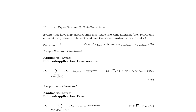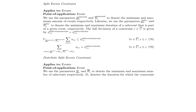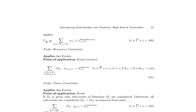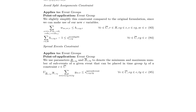The research details the constraints and parameters used. It begins with the assign resource constraint, which applies to events and specifies the point of application as the event resource. The assign time constraint is applied to events with the point of application as the event. The split events constraint includes parameters for minimum and maximum event amounts and durations. The distribute split events constraint covers parameters for minimum and maximum numbers of sub-events and their durations. Constraints for introducing individuality include prefer resources, prefer times, avoid split assignments, and spread events.